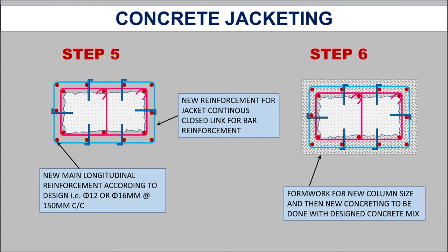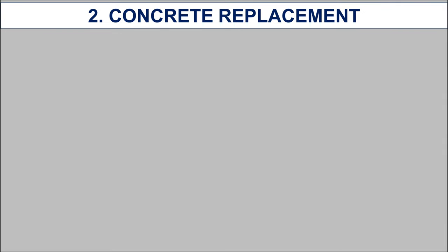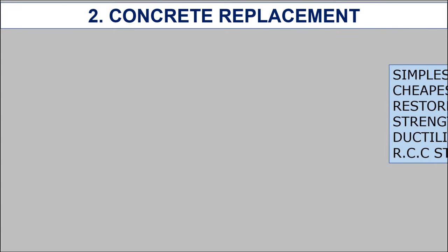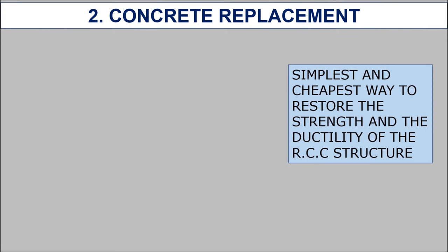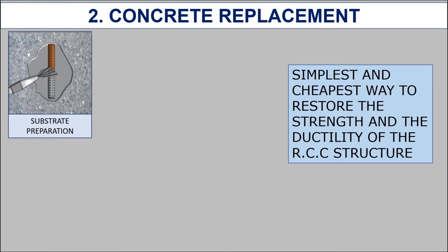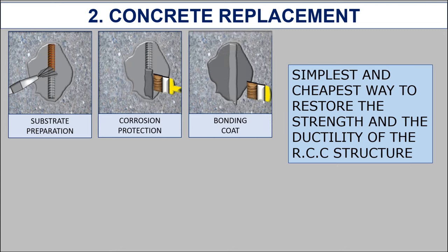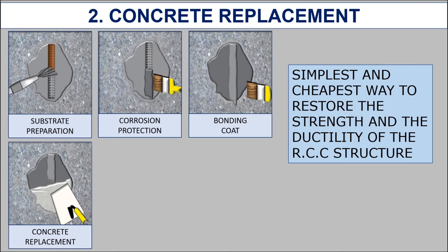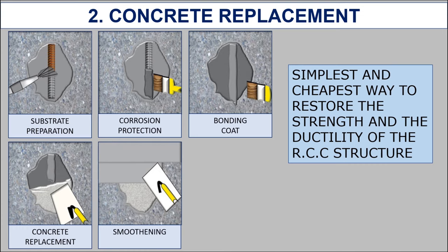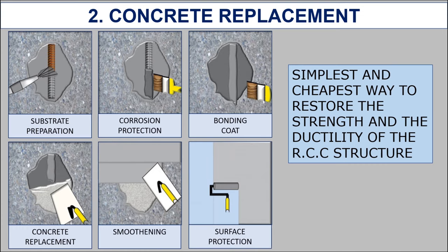The next method is concrete replacement, which is one of the simplest and cheapest ways to restore the strength and ductility of the RCC structure. The method initially involves removal of the damaged concrete. The final surface is cleaned and brushed properly to remove all loose material. If the reinforcement present in the compression zone is buckled in a small amount, then it should be strengthened.